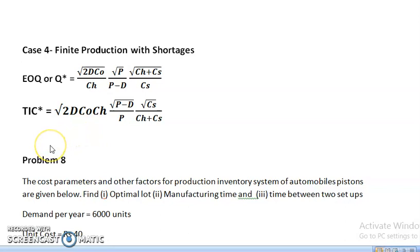Next, the equation for total inventory cost optimal is equal to square root of 2dCO CH into square root of P minus D divided by P into square root of CS divided by CH plus CS.